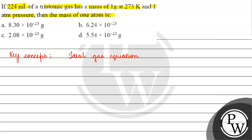Ideal gas equation हमारे पास क्या होती? वो थी PV = nRT. P क्या है? Pressure. इस question में pressure कितना दिया हुए? 1 atm. R is 0.082 liter per Kelvin per mole, and temperature is 273 Kelvin.